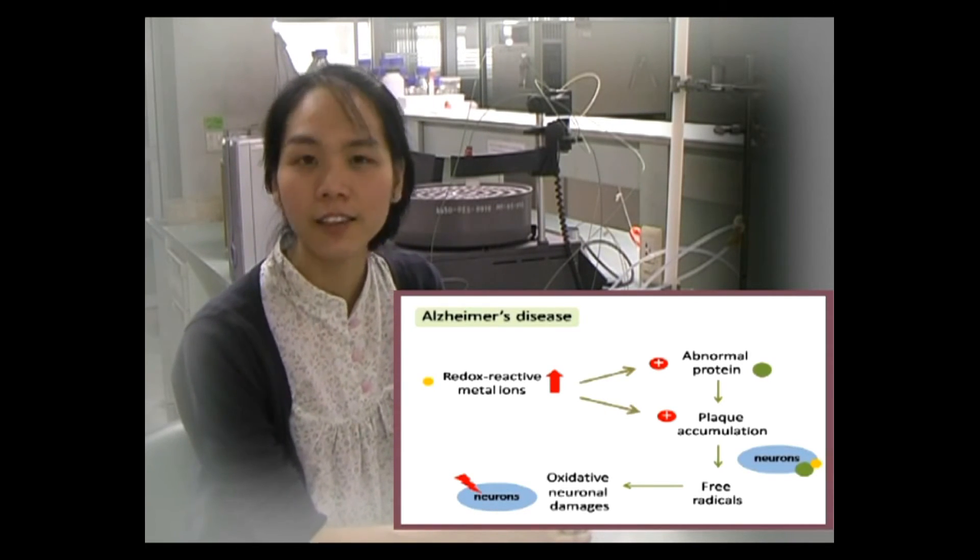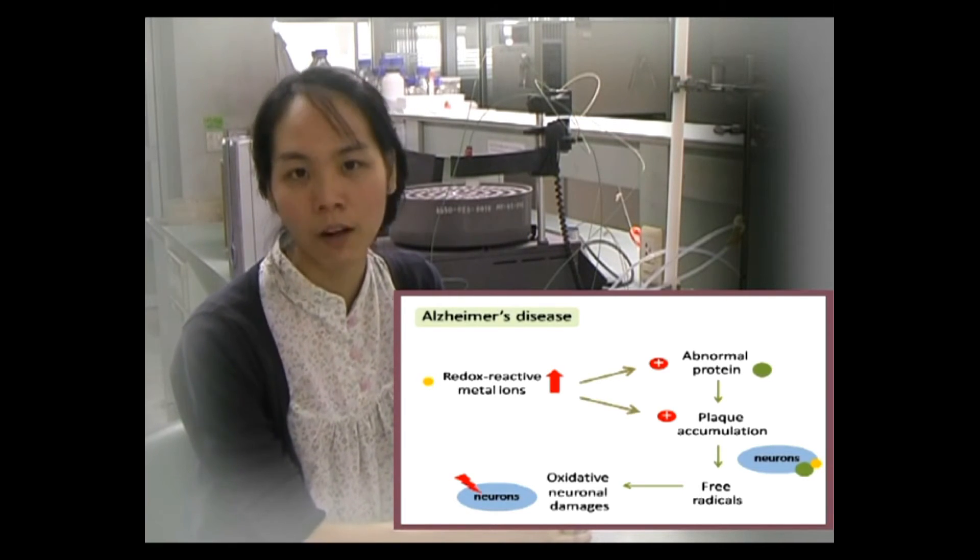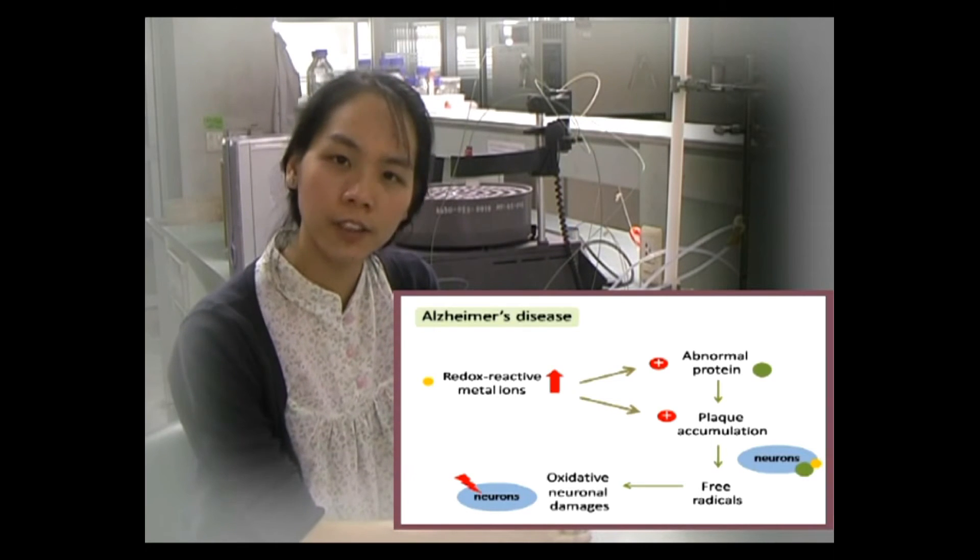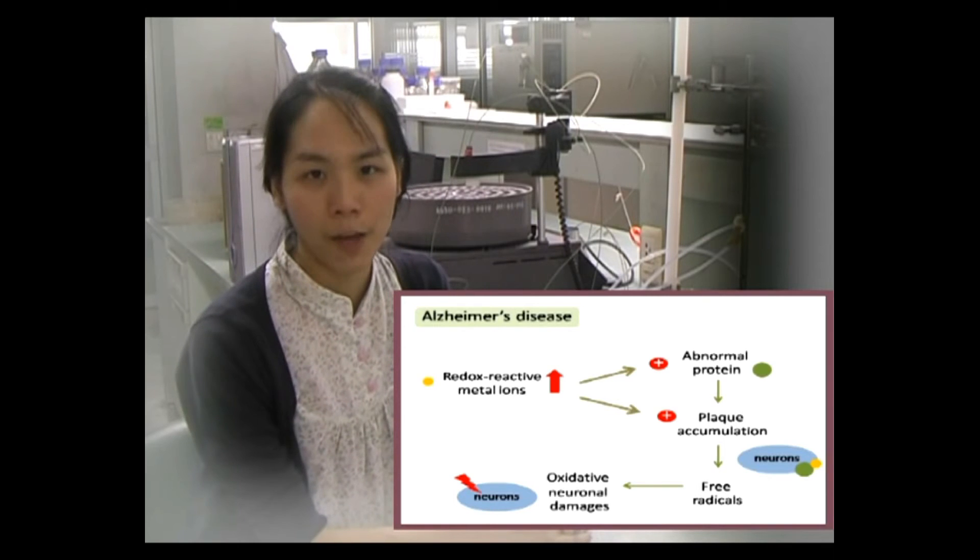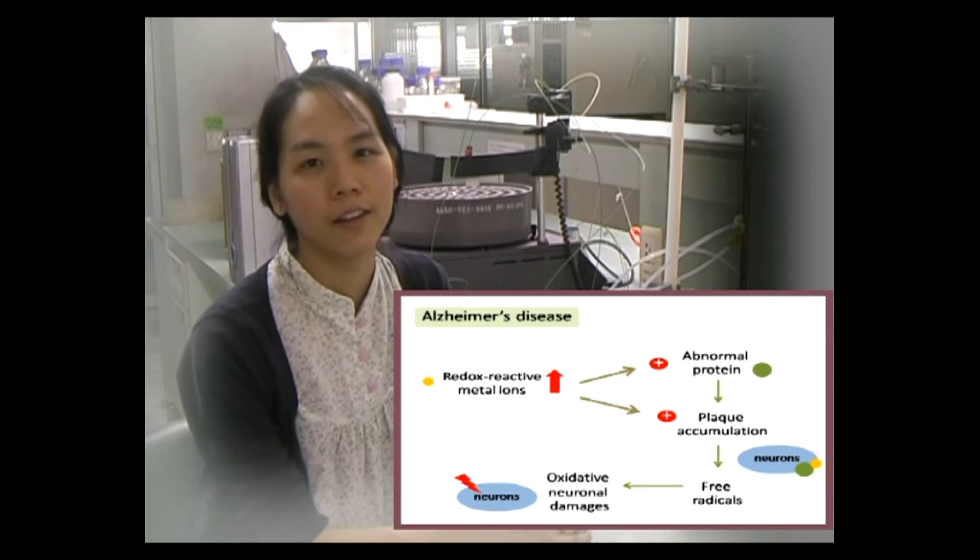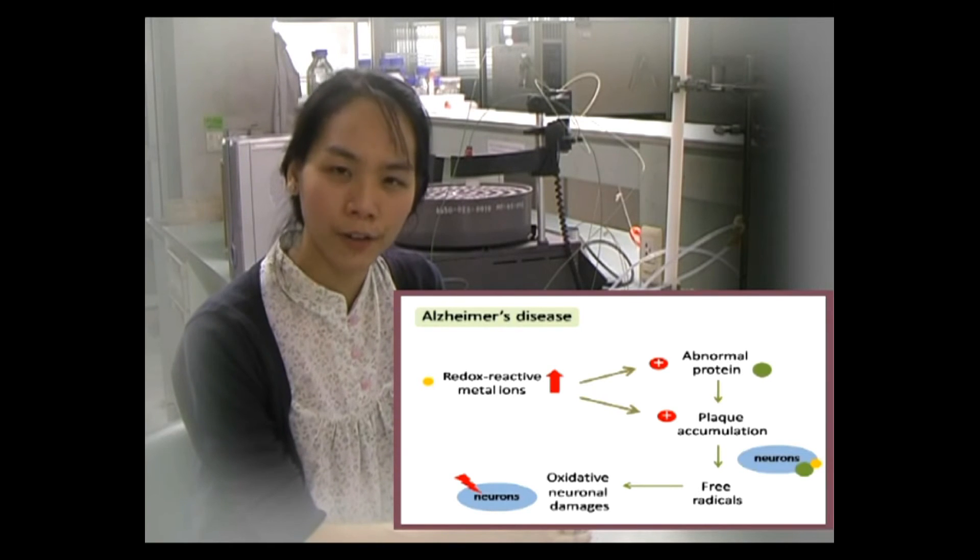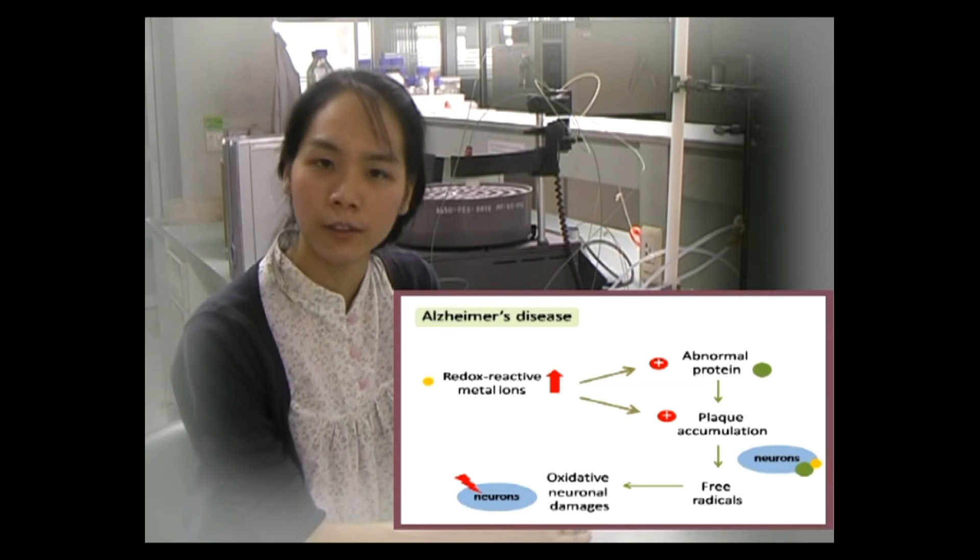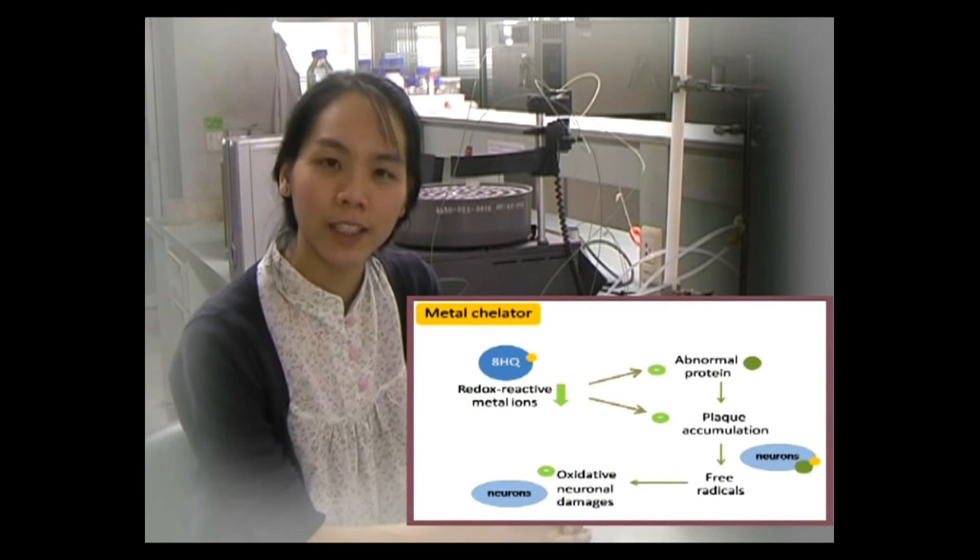The excessive metal ions can induce the production and accumulation of abnormal proteins in particular brain areas. The abnormal proteins and metal ions are accumulated together within the neurons as plaque. Consequently, free radicals produced by metal ions can cause neuronal damages, leading to neuronal cell death.